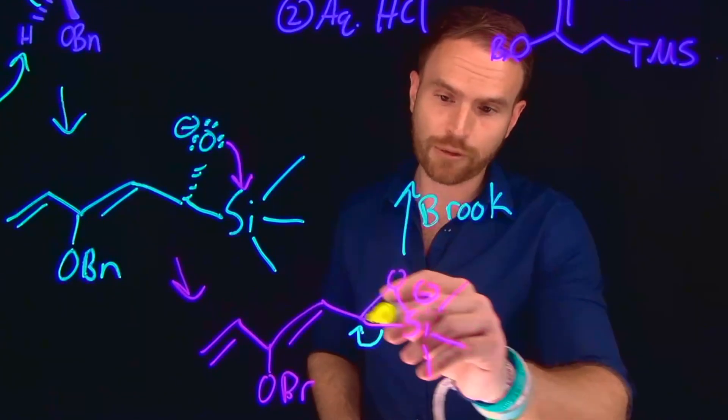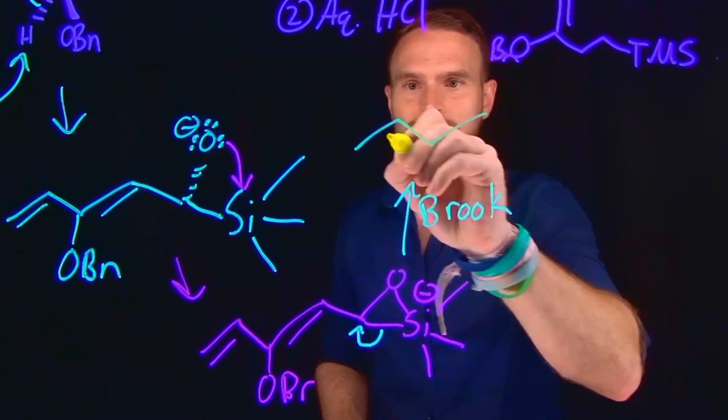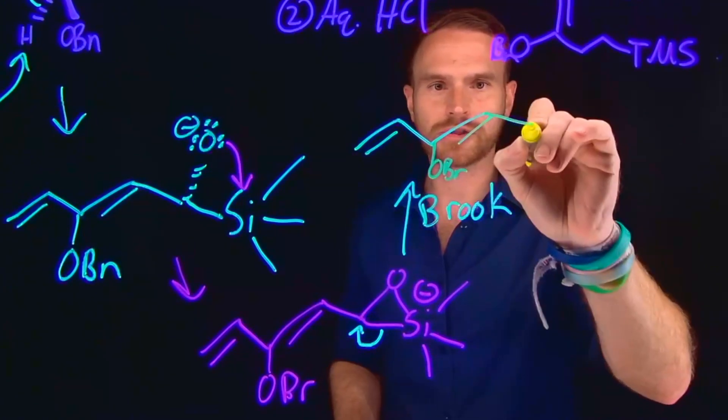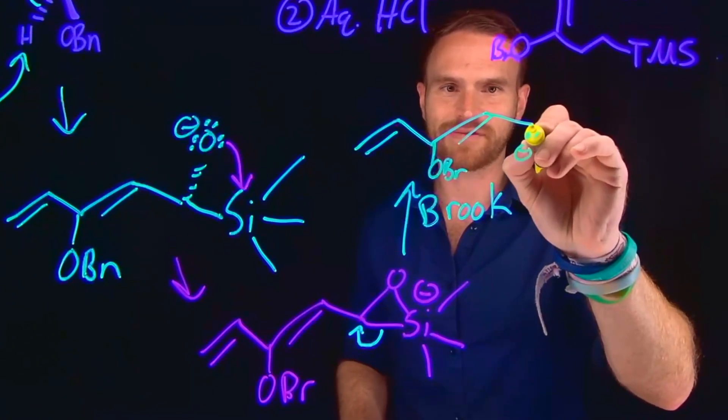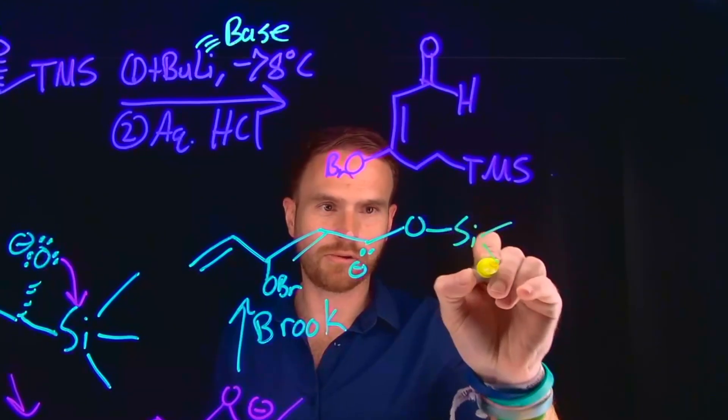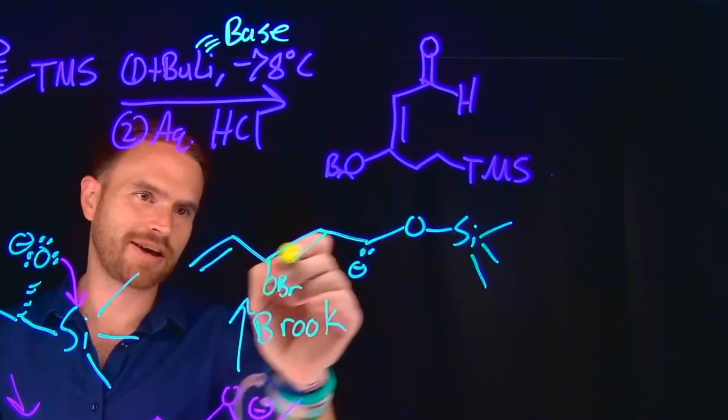And it also allows us to further elongate the conjugated pi system because now we're going to have these two alkenes located here with our benzyl ether. But then also now we're going to end up with another lone pair of electrons that's negatively charged. And then from here we have our O-trimethylsilyl located at this position. So notice what we have done is extend that conjugated diene.